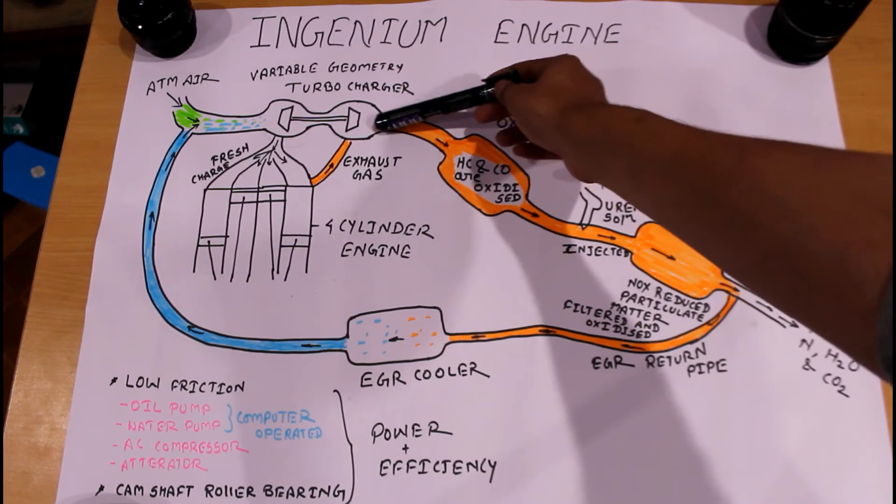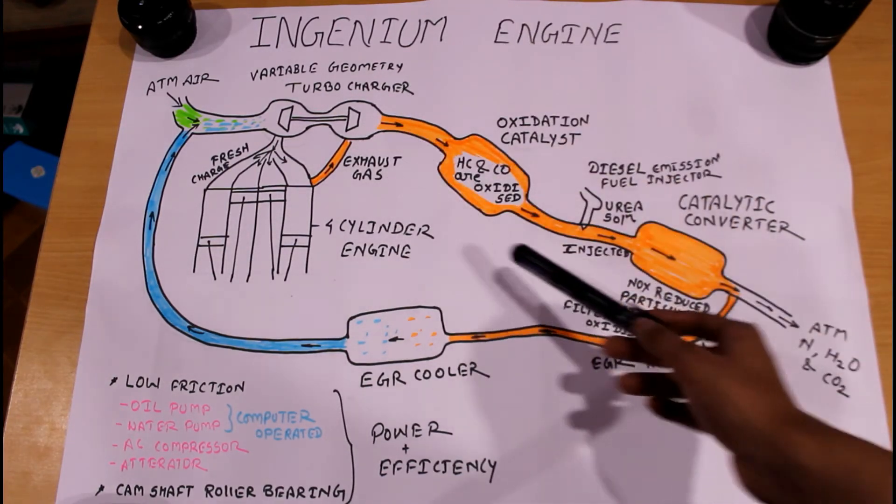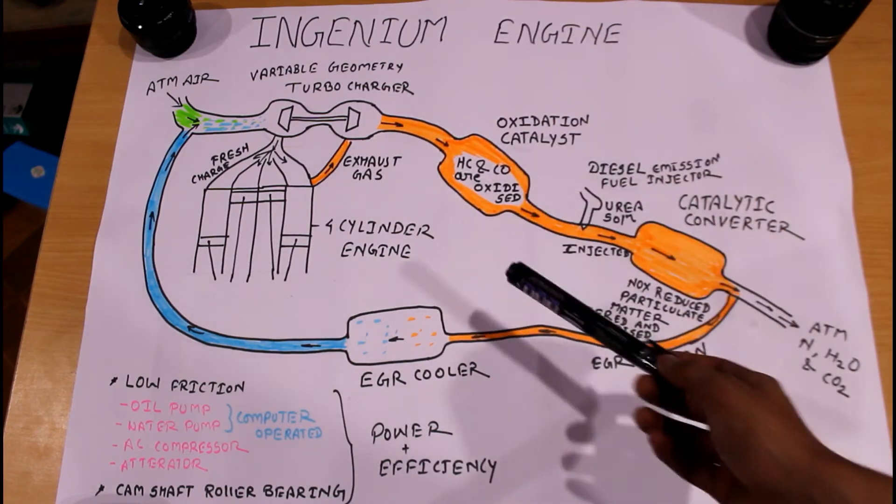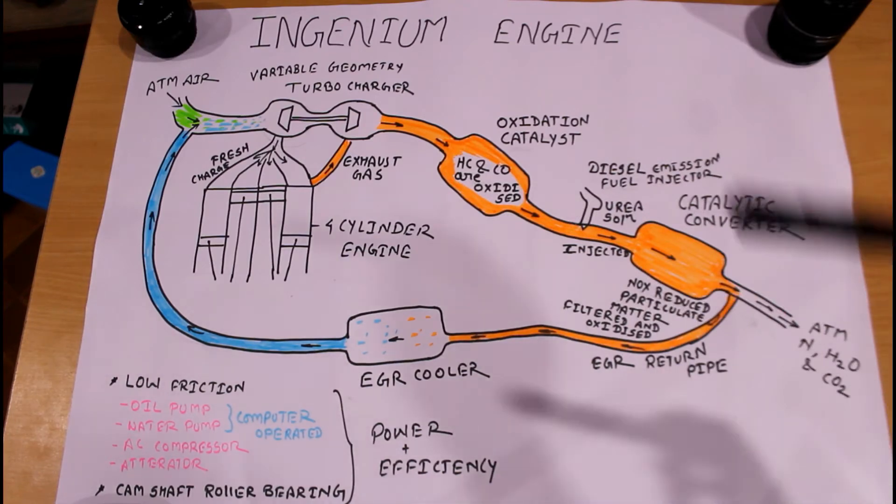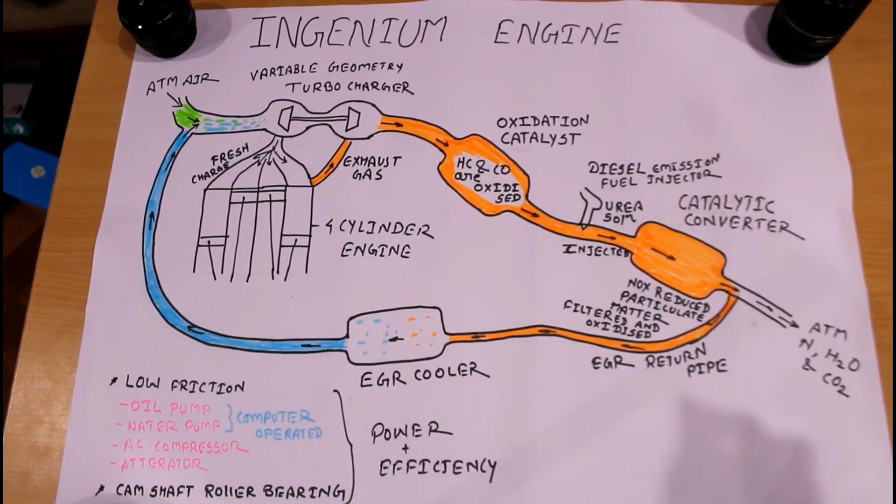After that, exhaust gases are released into the exhaust pipe and then come into the oxidation catalyst chamber. In this chamber, hydrocarbons and carbon monoxide are oxidized.